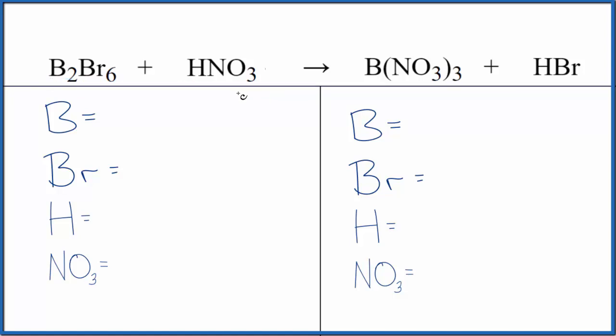So let's start with the type of reaction. In this case, it looks like the boron and the hydrogen are changing places. We have B(NO3)3 here, and then the hydrogen is going with the Br. So that's a double displacement reaction.